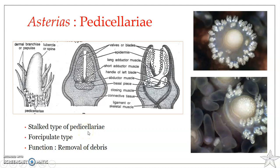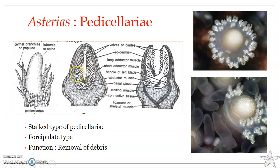Each pedicillariae consists of a short fleshy movable stalk bearing two articulating pieces. You can see the articulating areas and the lower base. Supporting the structure there are three calcareous plates.